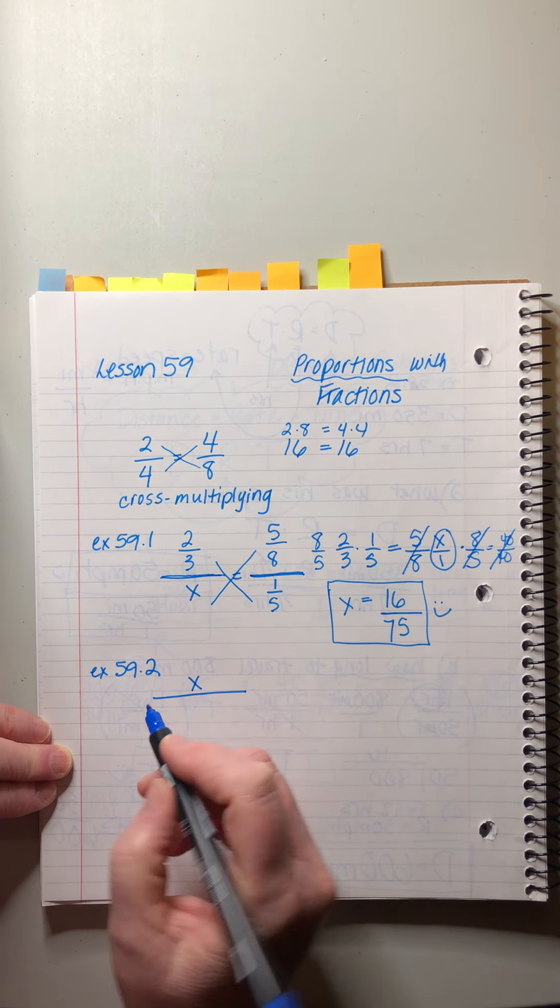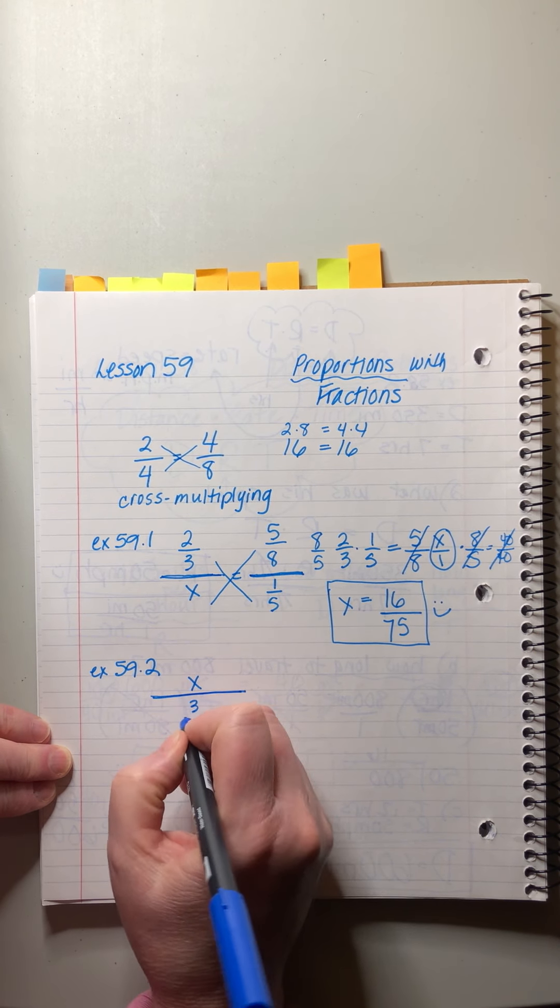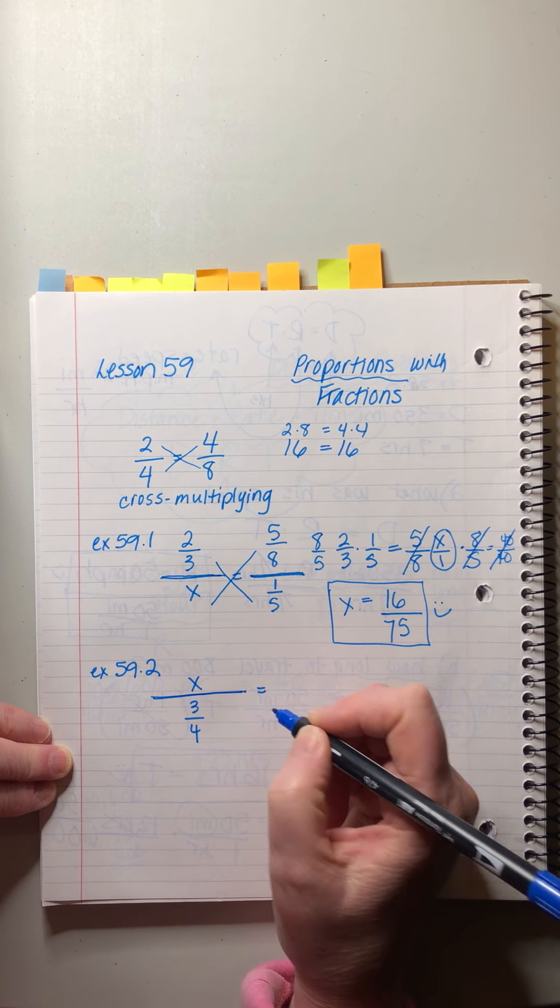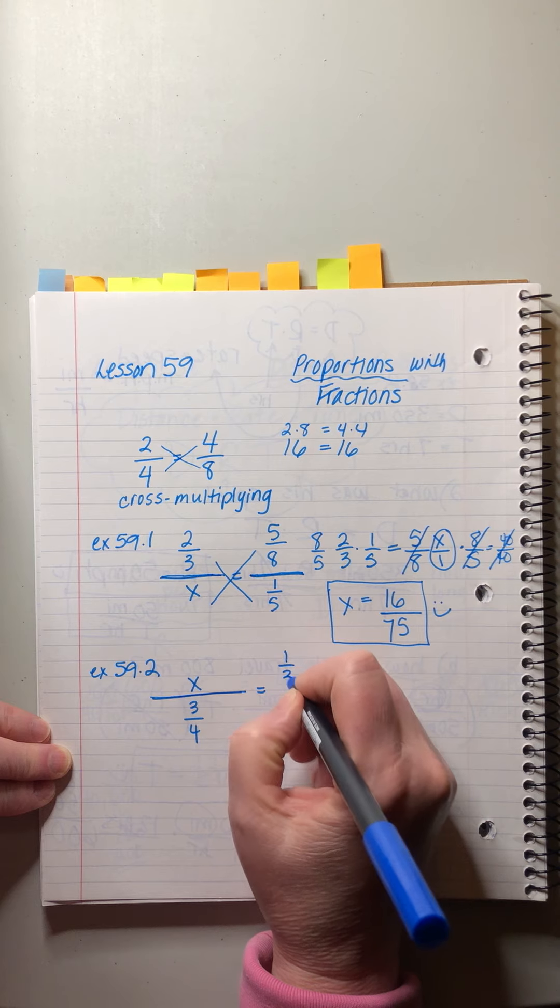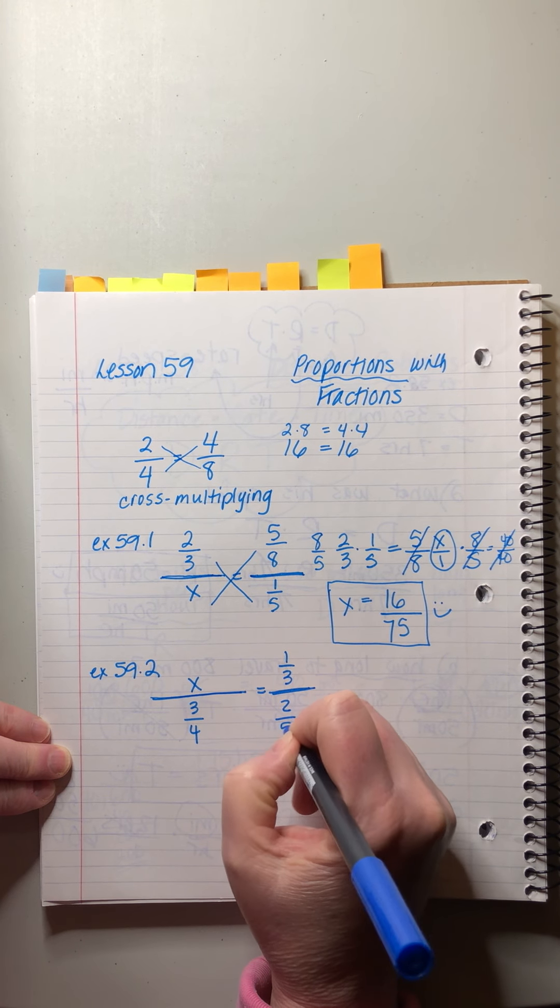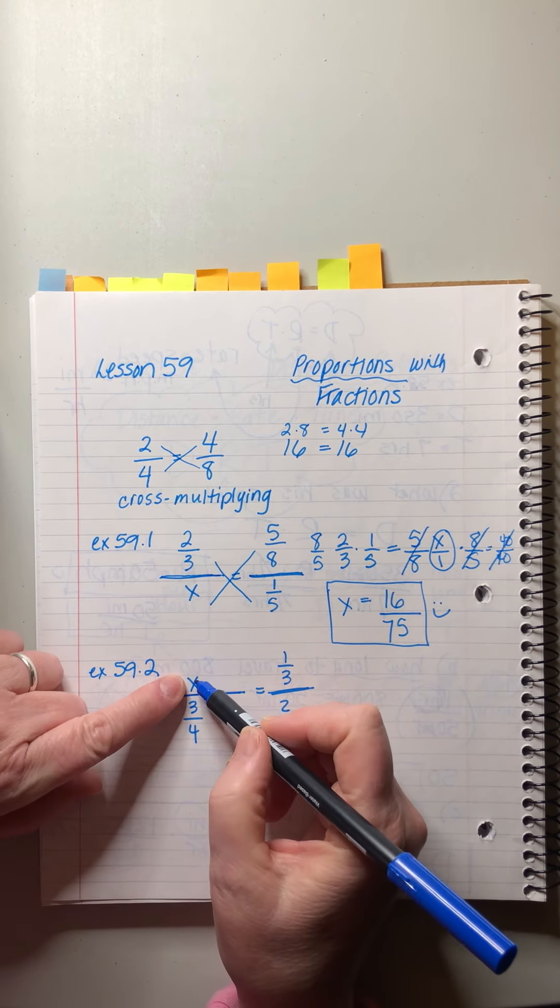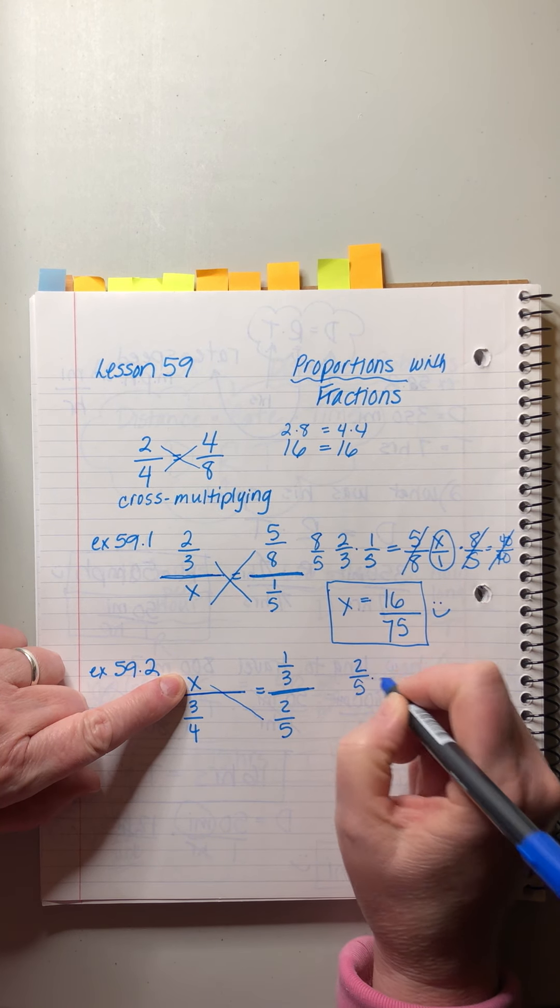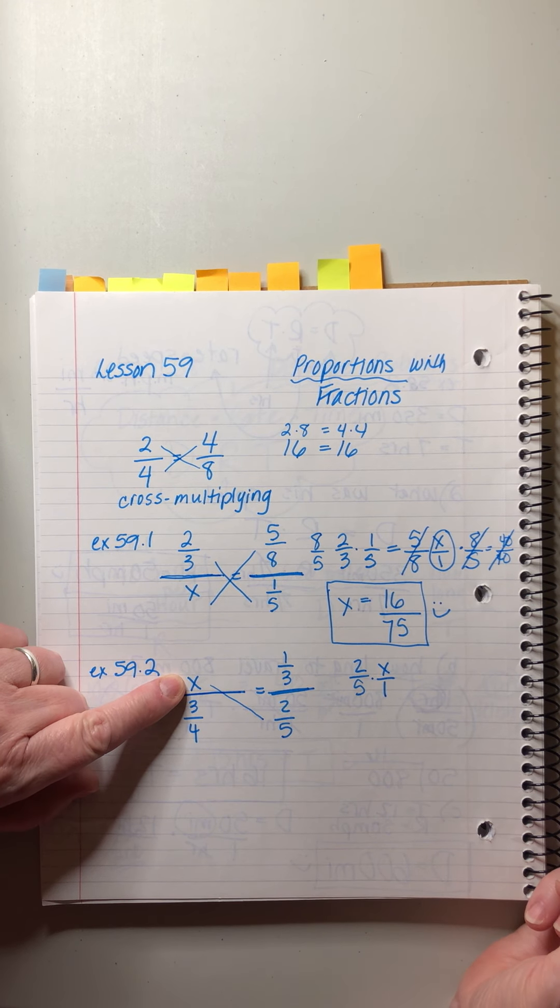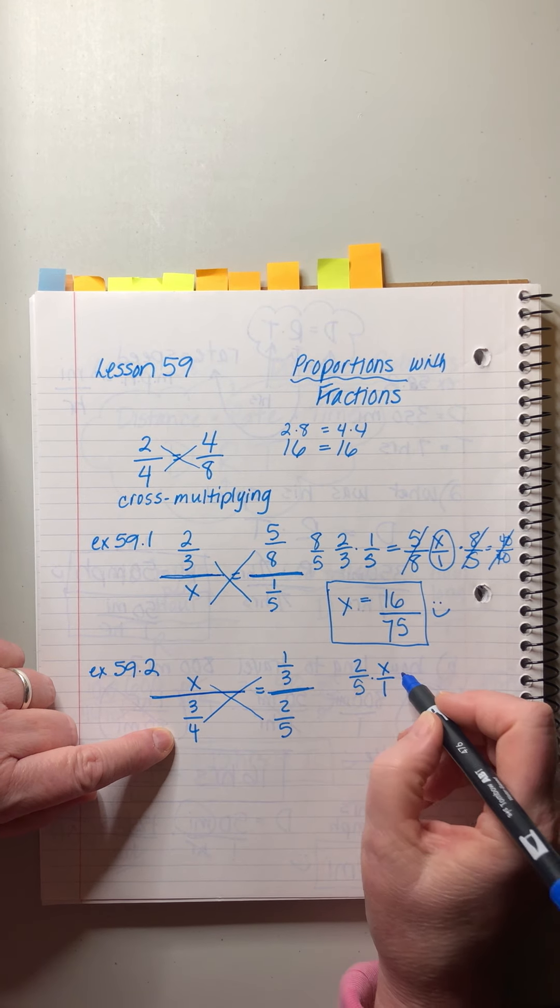Okay, there's only one other problem in this lesson, 59.2, and it's the same way. It just looks a little different because we have x in one of the four areas by itself, and then underneath we have 3/4. And then over here. Okay, I'm just copying to make sure I wrote it right. Looks really good.